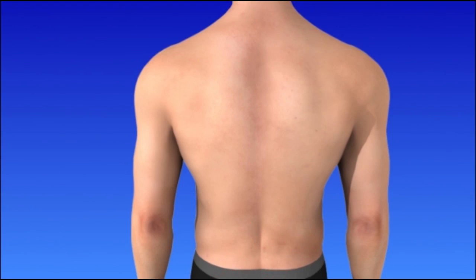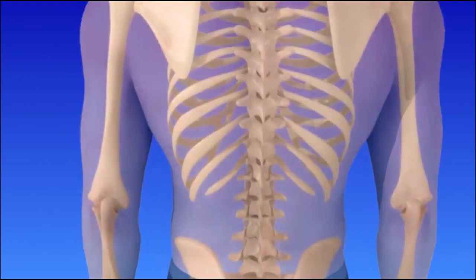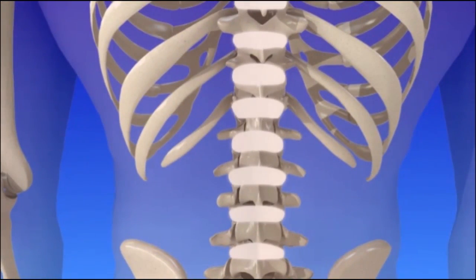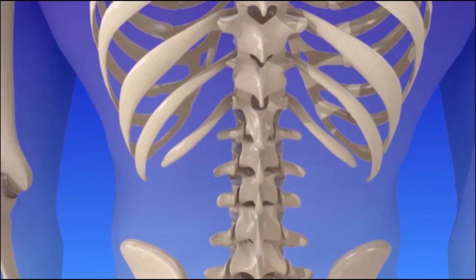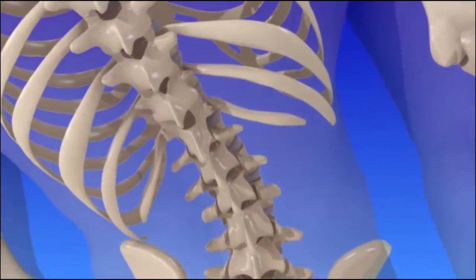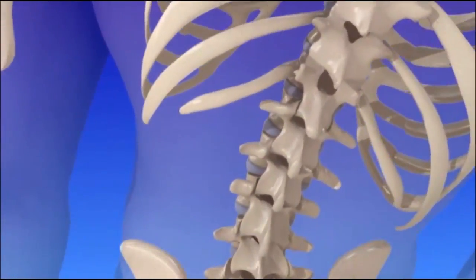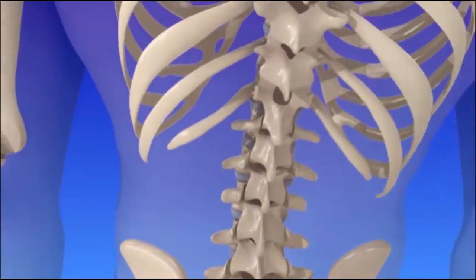Let's take a look at the spine anatomy. Intervertebral discs are located between the series of bones called vertebrae, which make up the spine. The disc and two facet joints connect the vertebrae, provide stability, and allow movement.